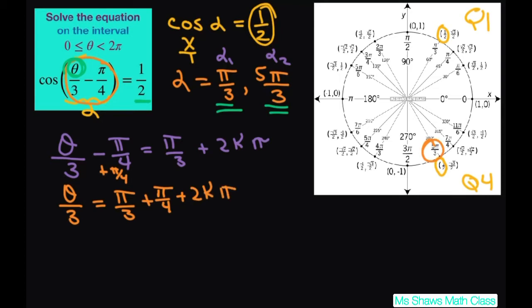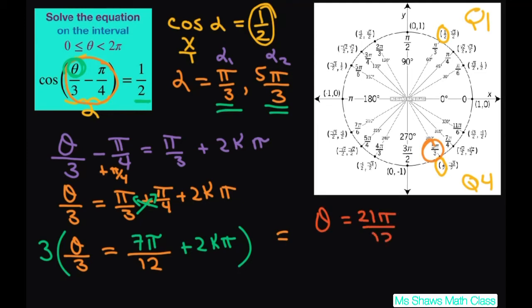So this gives you theta divided by 3 equals, common denominator is 12. So when you multiply these you get 4π plus 3π, which gives you 7π over 12. So for this one we've got to multiply both sides by 3 of the equation and that's going to give us theta equals 21π divided by 12 plus 6kπ.